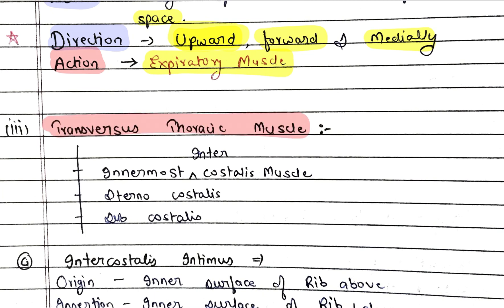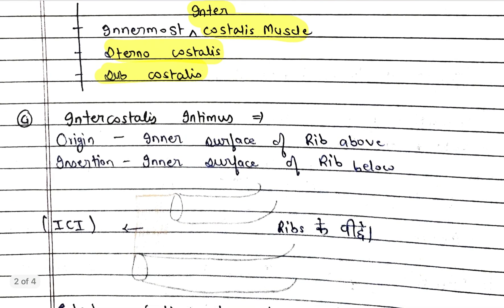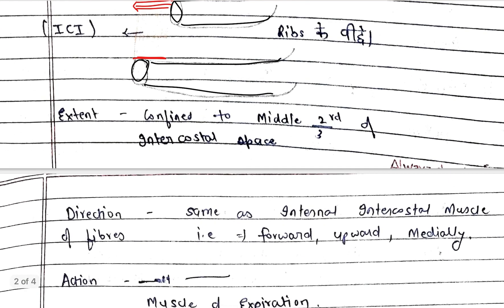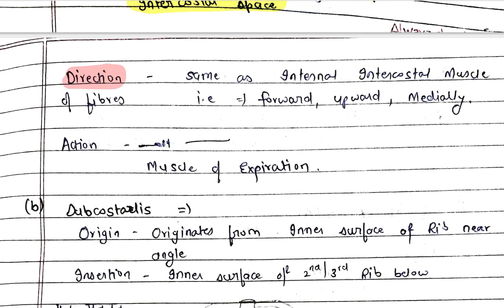Now let's talk about the transverse thoracic muscle. It has three parts: innermost intercostal muscles, sternocostalis, and subcostalis. First, the innermost intercostal muscle (intercostalis intimus): origin from the inner surface of the rib above; insertion into the inner surface of the rib below. The upper rib is origin and it inserts into the lower rib. Extent: confined to the middle two-thirds of the intercostal space. Direction: forward, upward, and medially — same as internal intercostal. Action: it is also a muscle of expiration.